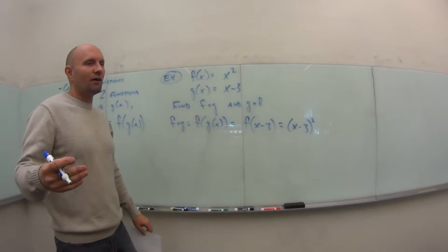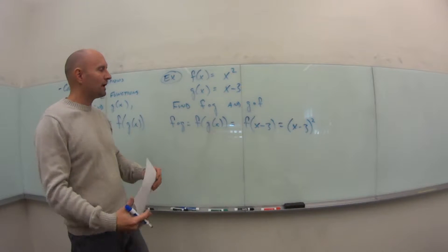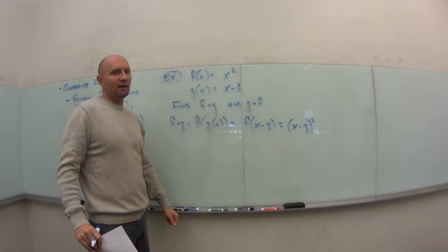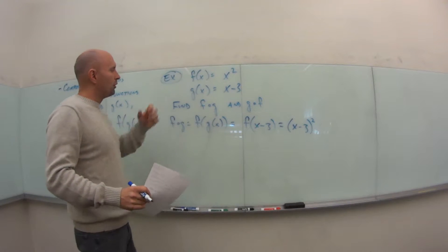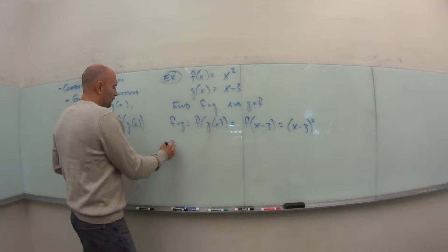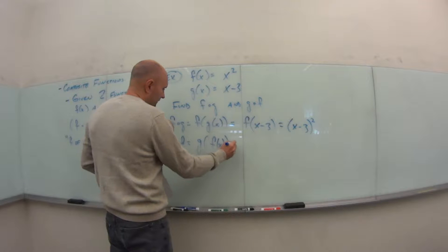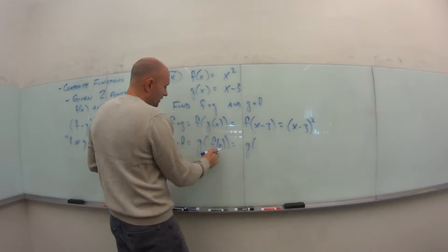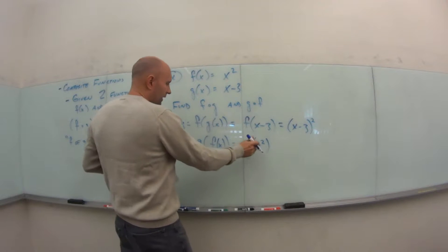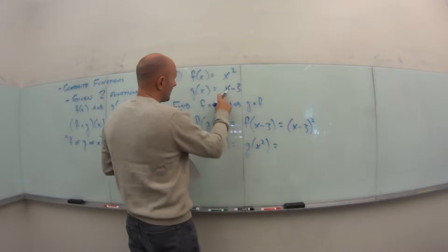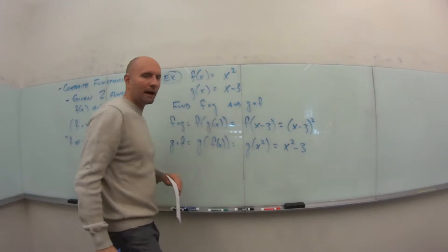The essence of math is to make complicated things simple, not simple things complicated. Don't make this more difficult than it is — just take one function and put it into the other. For g∘f, this is g of f(x), and f(x) is x², so we take x² and plug it into g anywhere we have an x, giving us x² − 3.